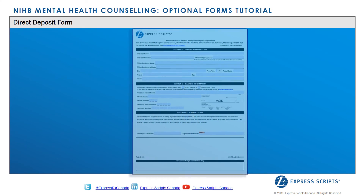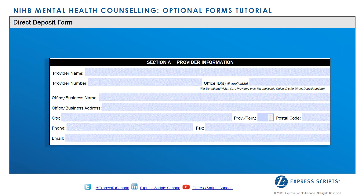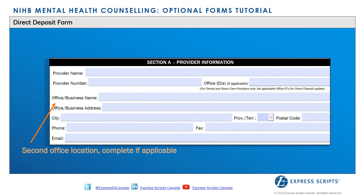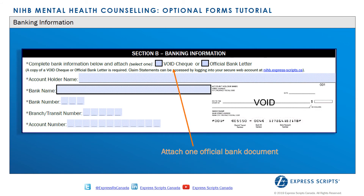This is the direct deposit form. The option to receive payments by direct deposit can be set up at any time and is not a mandatory requirement to enroll. If the provider is enrolling one location, it is not necessary to complete Section A. If enrolling multiple business locations, the provider must complete Section A and indicate which location this form applies to. To add banking information for claim payments, providers must complete all of Section B and attach either a void check or other official bank document associated with the account they wish to add or modify.